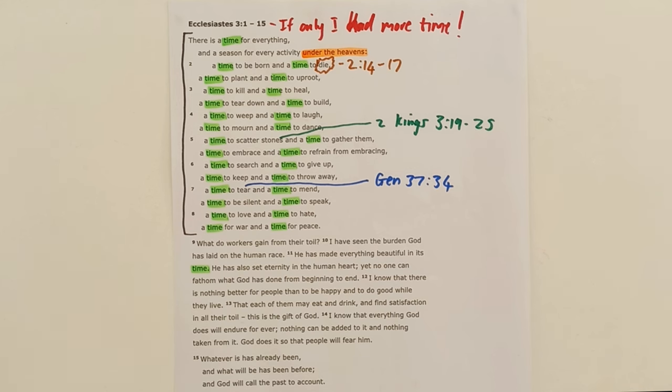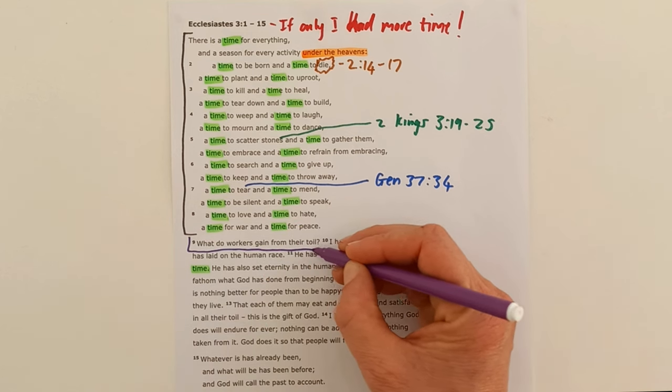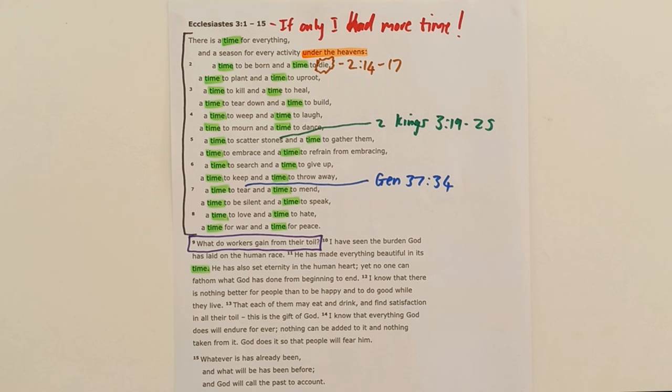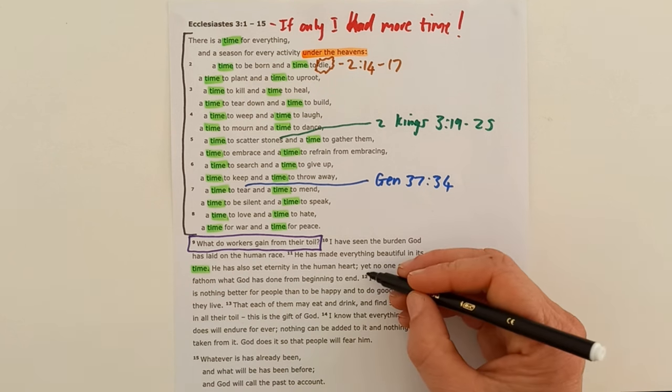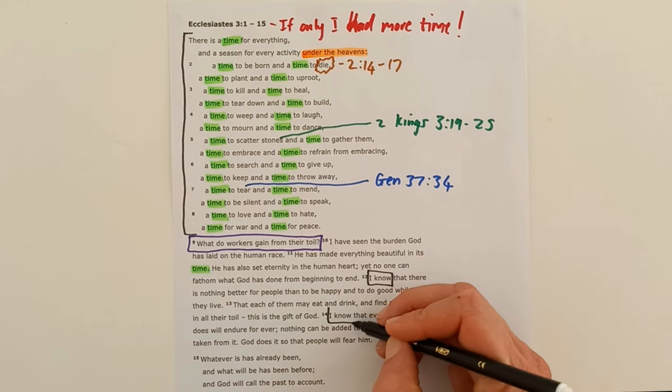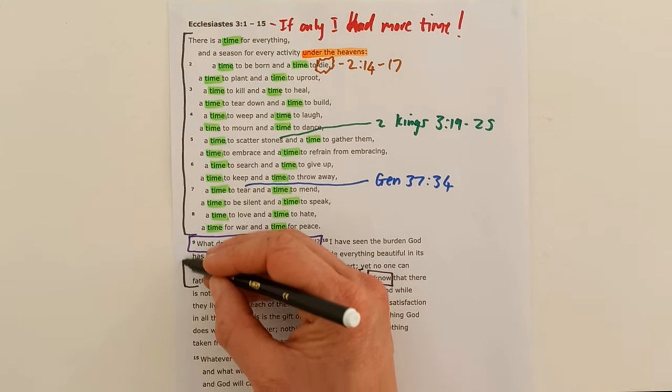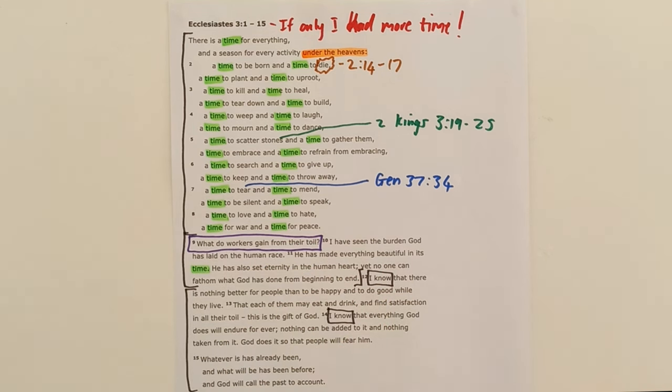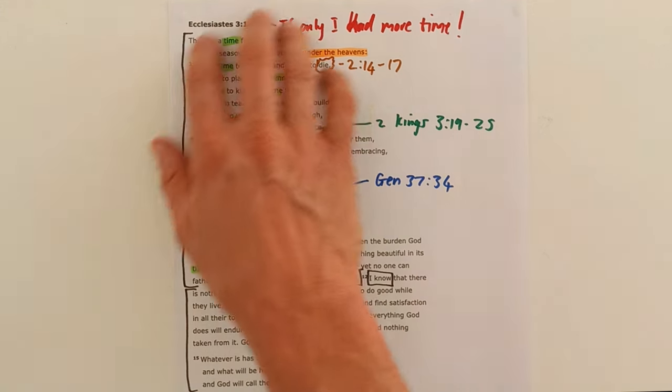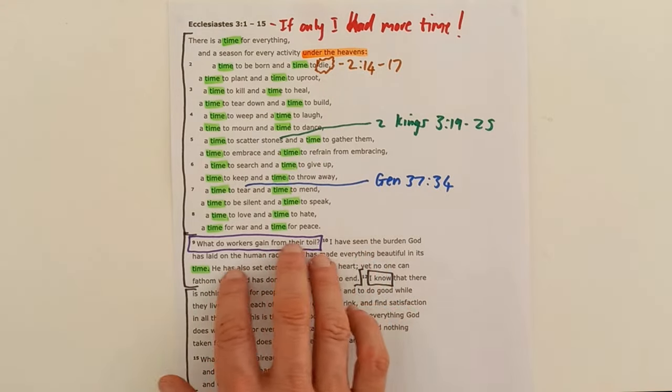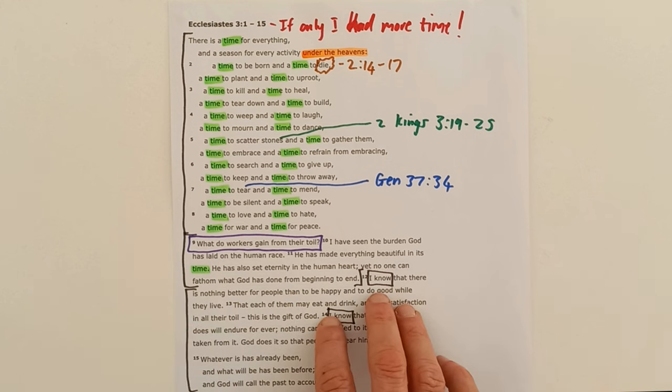These verses are going to help us to understand these verses with a much greater fullness. Just to help us with a bit of structure, the next section starts with a question. And then in verses 12 and 14, we get two I know statements. That helps us see the structure: verses 9 to 11 as the central section, and then 12 to the end of 15 as the final section. Here we see he's been thinking about time, and here we see the real frustration that he has with time.